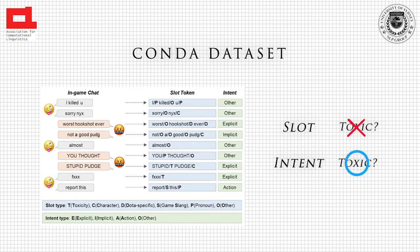For example, the figure shows an utterance 'not a good pug,' which does not contain any toxic words. But considering the previous utterance of 'worst hookshot ever,' we can identify hidden implicit toxicity.